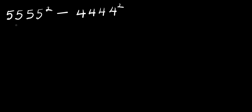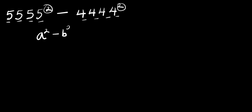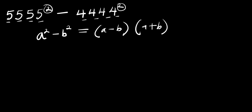Hello. How to evaluate with our calculator: 5555 squared minus 4444 squared. So we can make use of the difference of two squares. If you have a squared minus b squared, this equals a minus b times a plus b. And this is our a, and this is our b.